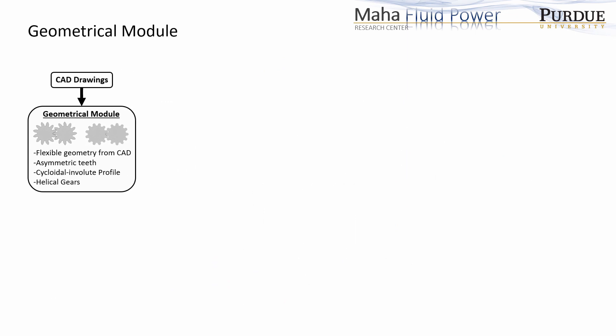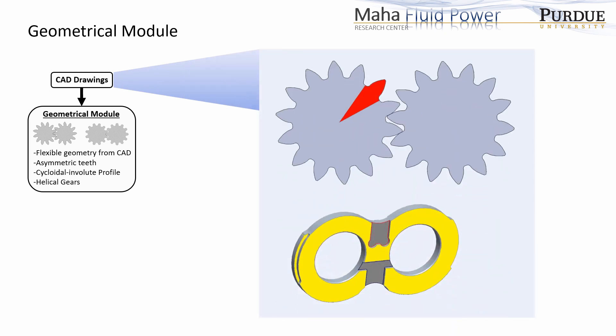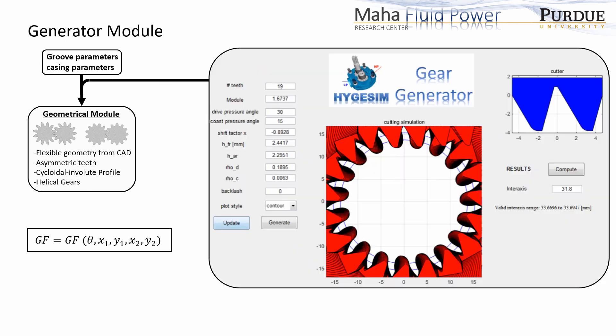First is the geometrical module. This module takes CAD drawings of key components of the machine — like gear teeth, machine casing, and porting groove — as input. It then calculates the values of necessary geometrical parameters as a function of angular position of gears and their position in the casing. A gear generator can also generate a gear profile from analytical parameters, so parameterized data of gear tooth can be passed to the gear generator module, and the generated tooth profile along with parameterized data of porting grooves and casing can be used as inputs to the geometric module.